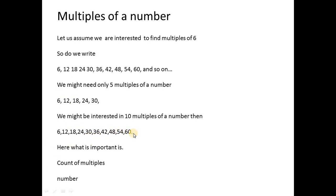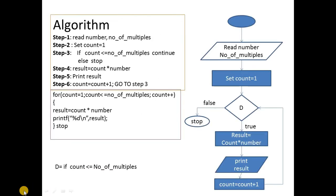So when talking about this, there are two things to keep in mind: for which number you want the multiples, and how many multiples you want for that number. So you need the count of multiples and also the number. The algorithm requires two inputs: the number and the number of multiples.